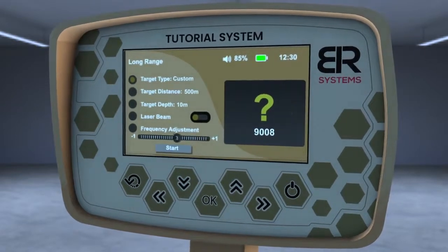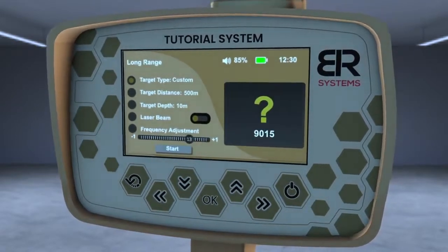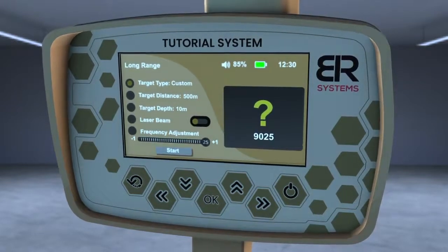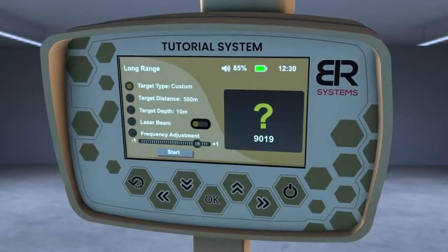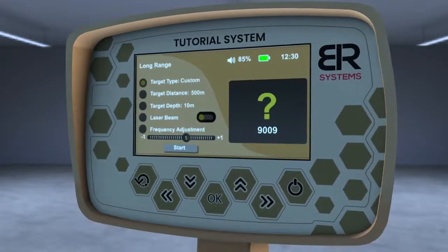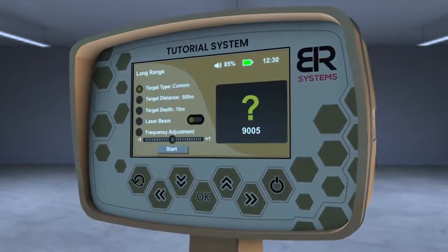You will see that you can decrease or increase the search frequency by a maximum of 25 hertz plus or minus, and that each degree of frequency change adjustment is about 1 hertz.